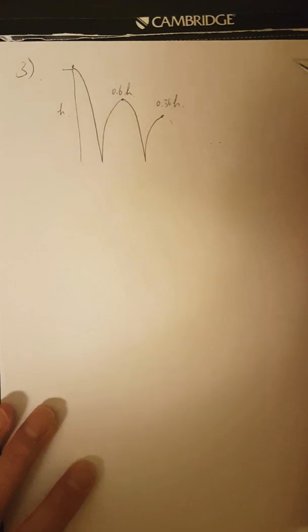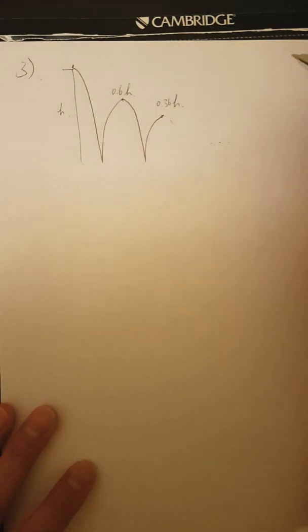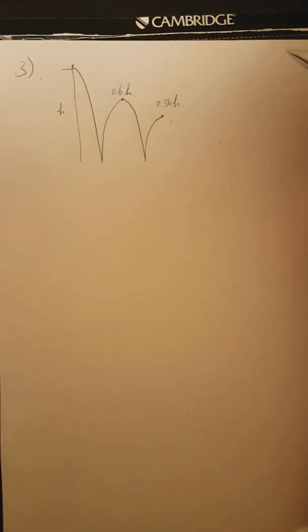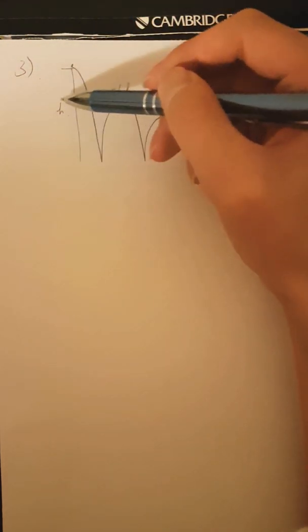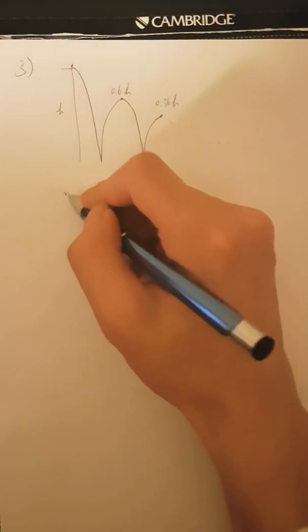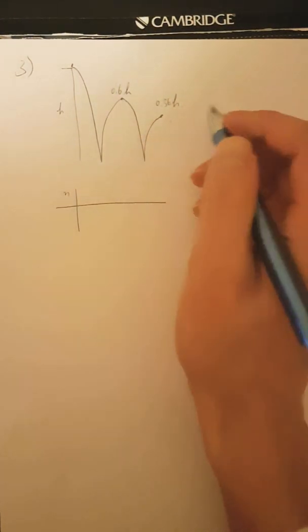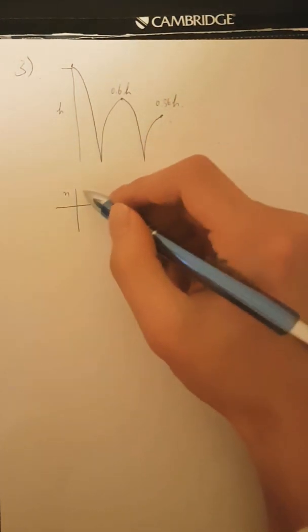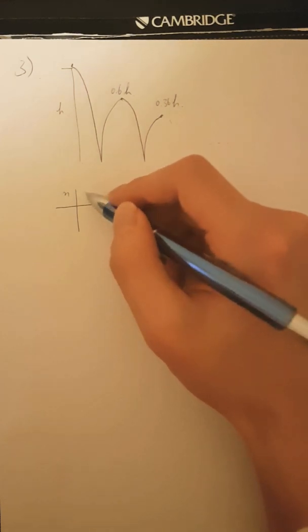And if that's the case, how many bounces does it take before the height of the bounce goes below 10% of the original height? So in this case, we don't know what the initial height is going to be, but let's just call it H. So what we're interested in is this is going to be the first bounce.